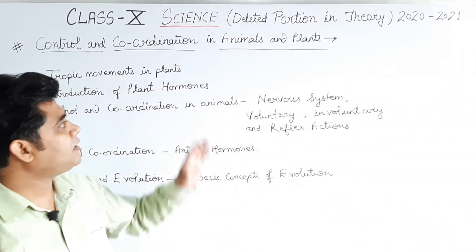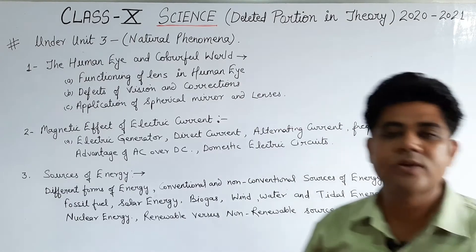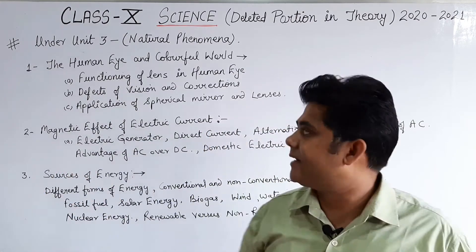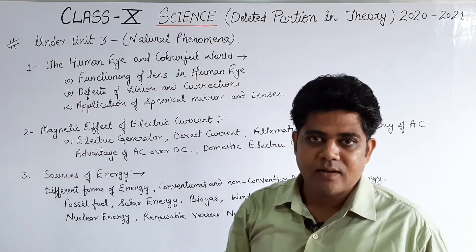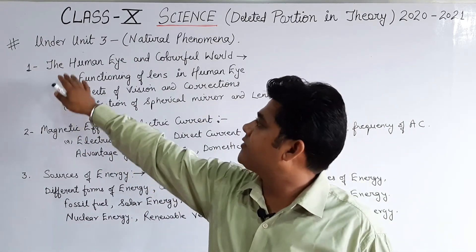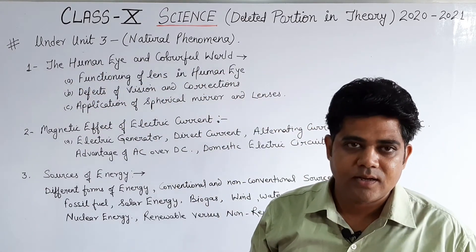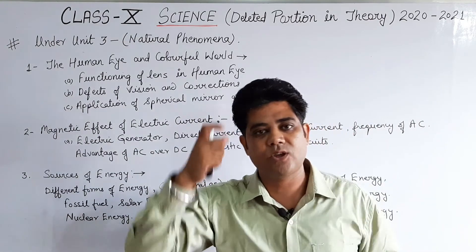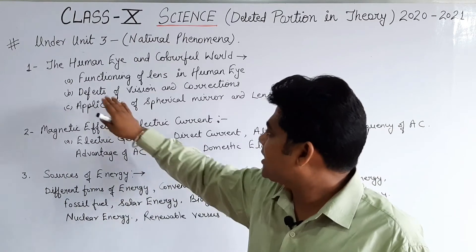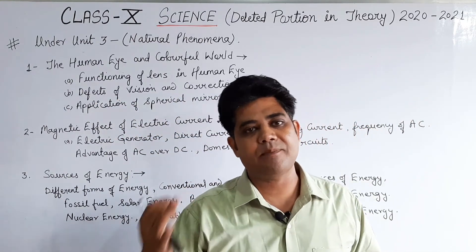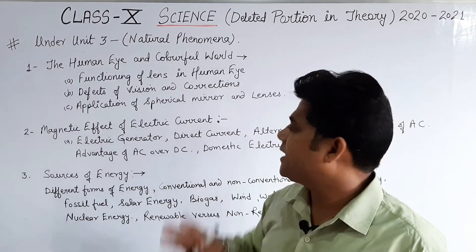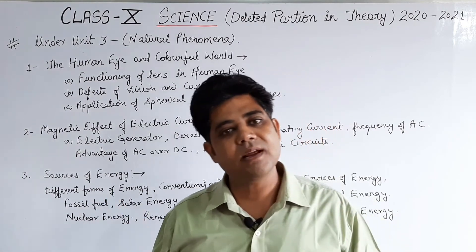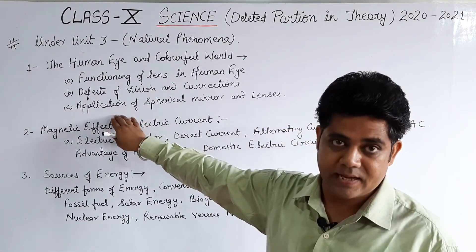Now in physics, under Unit 3 Natural Phenomena, the chapter is The Human Eye and the Colourful World. From this chapter, the following are deleted: functioning of the lens in the human eye, defects of vision and their corrections — myopia, hypermetropia, astigmatism — and the application of spherical mirrors and lenses. Only the applications have been removed.